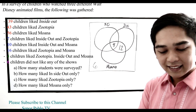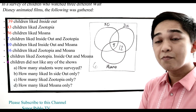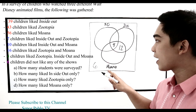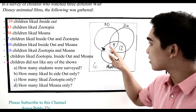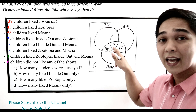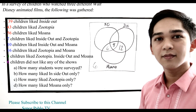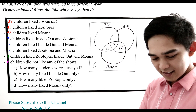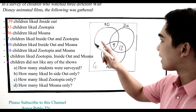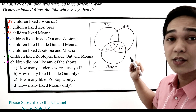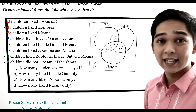10 children like Inside Out and Moana. We subtract the center intersection: 10 minus 4 equals 6. So we write 6 in the Inside Out-and-Moana region. Next, 7 children like Inside Out and Zootopia. Since we already have 4 in the center, 7 minus 4 equals 3. So we write 3 in the Inside Out-and-Zootopia region.